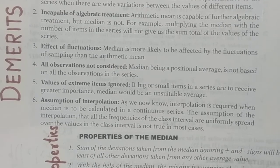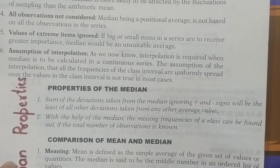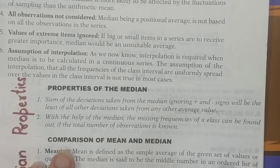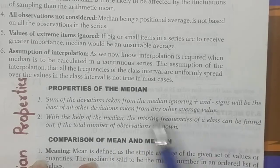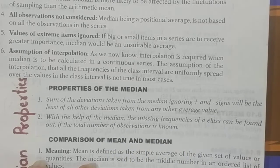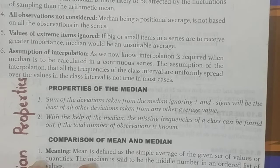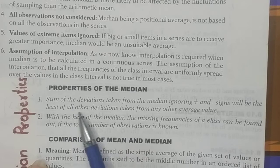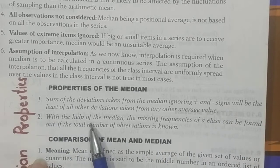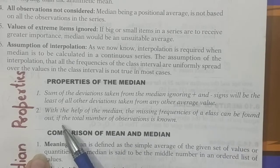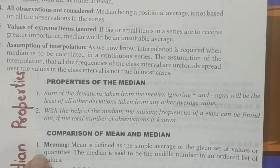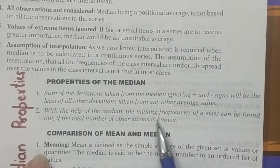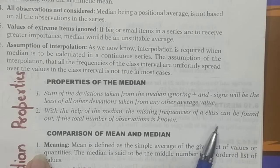Now the properties of median. I will cover only two major properties. Property one: the sum of the deviations taken from the median, ignoring plus and minus signs, will be the least compared to deviations taken from any other average value. Property two: with the help of the median, missing frequencies of a class can be found out if the total number of observations and the median value are known.